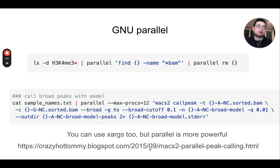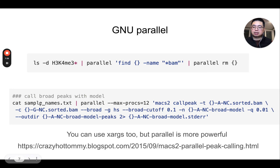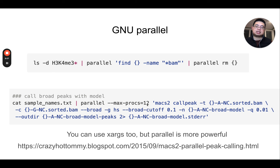In another example, which I showcase in an old blog post, you can call peaks using MACS2 for ChIP-sequencing data in parallel. If you have multiple samples, you can use this command: parallel with macs2 callpeak, specifying the BAM file name, the histone modification, the input, and all the parameters. Instead of using a for loop, you can call peaks for 12 samples in parallel. It's very handy.